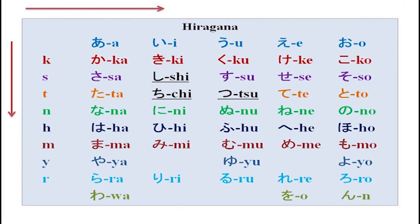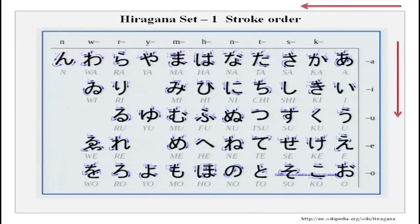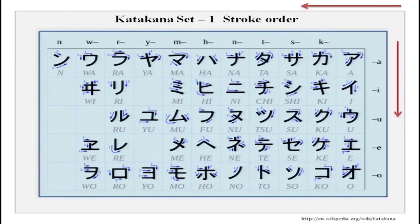Now you will see that katakana, though the pronunciation is the same, has a very different writing system — it is very, very angular unlike hiragana, which is cursive and round. Katakana is extremely angular and masculine. The sounds are the same: a, i, u, e, o; ka, ki, ku, ke, ko; sa, shi, su, se, so; ta, chi, tsu, te, to.